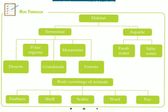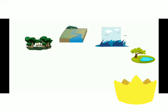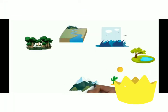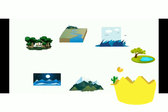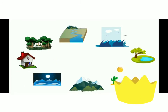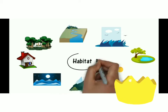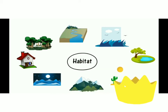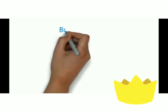Terrestrial animals are those who live on land. We will discuss about body coverings also. These are the different habitats such as soil, water, air, snow and rocks. The place where an animal lives, feeds and reproduces is called its habitat.